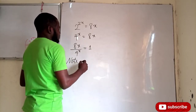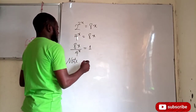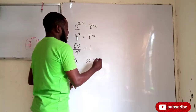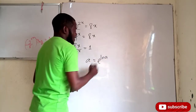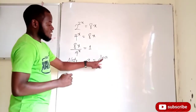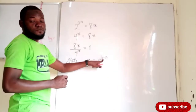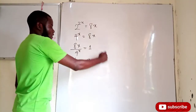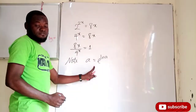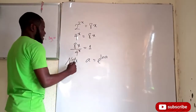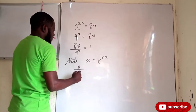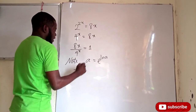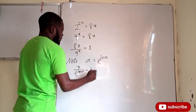I want you to note something: if I have a, this is the same thing as e to the power of ln a. Since the base is e and this is also e, they cancel to give a. So if this holds for every mathematical statement, I can write x over e to the power of ln(4 to the power of x) equals 1 over 8.